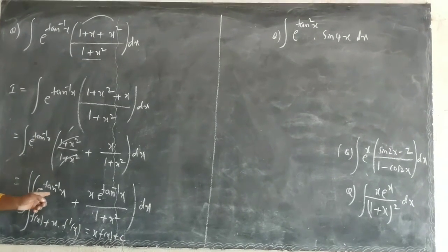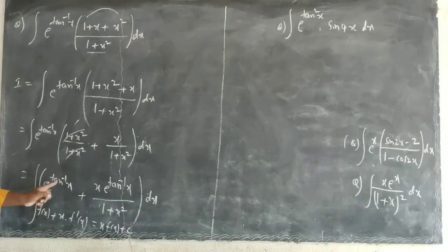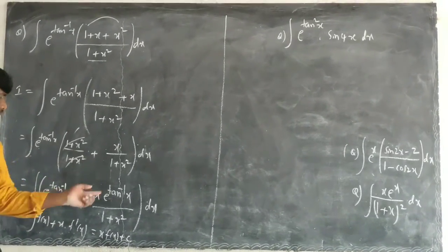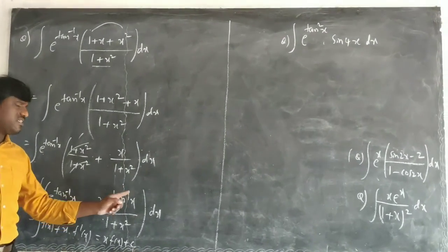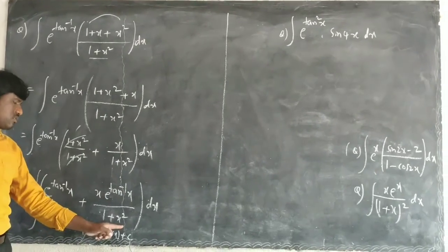How is this f'? e^(tan^(-1)x) is a function. What is the differentiation of e^x? e^x's differentiation is e^x. What is tan^(-1)x's differentiation? 1 by (1+x²).